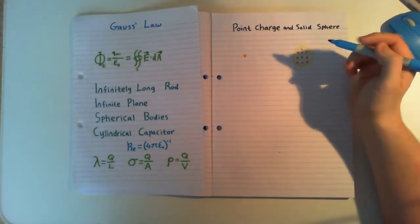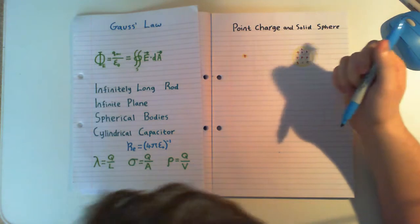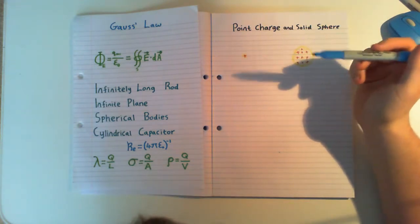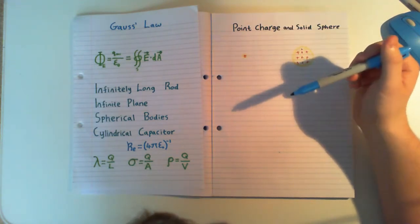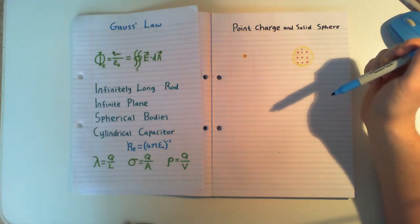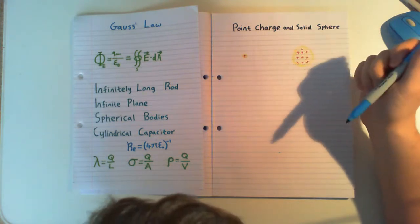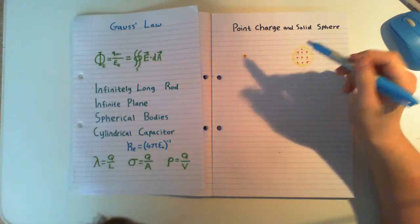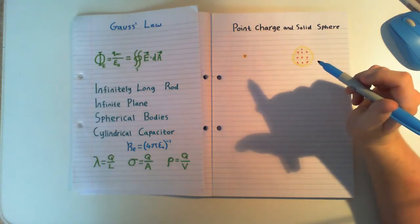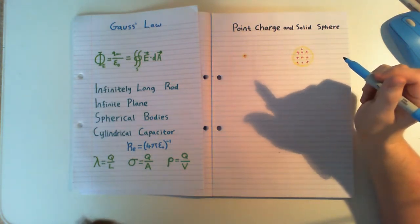Welcome back. We're carrying on with our Gauss's Law series, and for this one we're going to be doing some spherical bodies. We're going to do three in this: a point charge, a conducting solid sphere, and a non-conducting solid sphere. The point charge and the conducting solid sphere are going to be very similar, and we're going to use one of them to solve the other quite quickly.